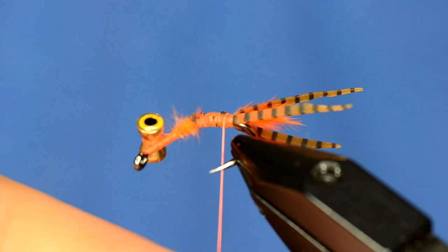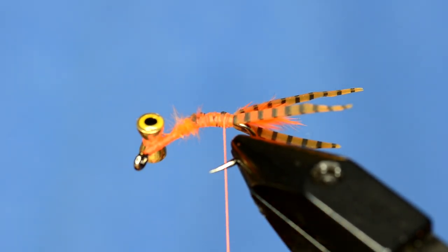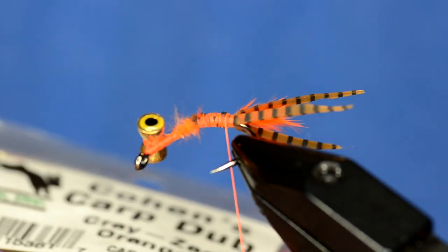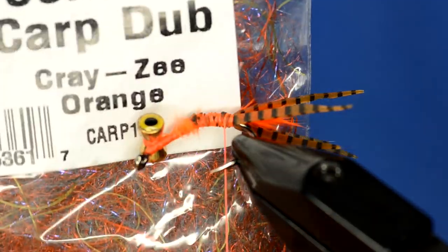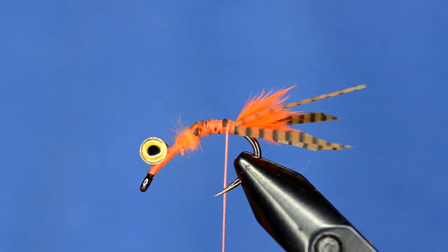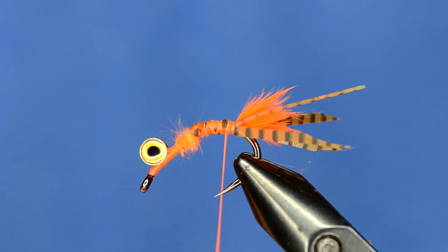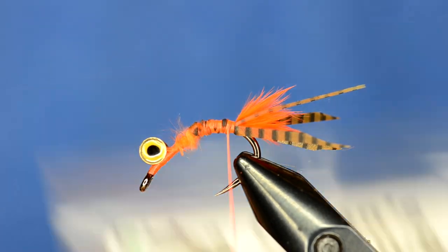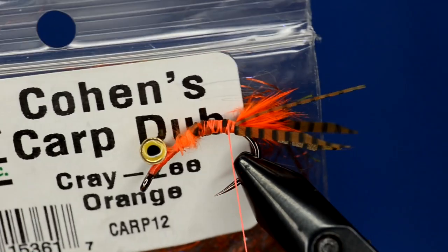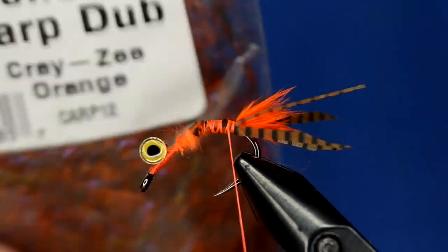So I'm going to use something that you probably have all seen now, that's Cohen's Carp Dub. This one's Crazy Orange that we're going to use. So it's basically a cool dubbing with little rubber legs all mixed up in it and I'm going to stick it in a loop because I don't want to bind it down too much and I also find that the dubbing it without using a dubbing loop is kind of difficult because these little rubber legs don't really bite in as well.